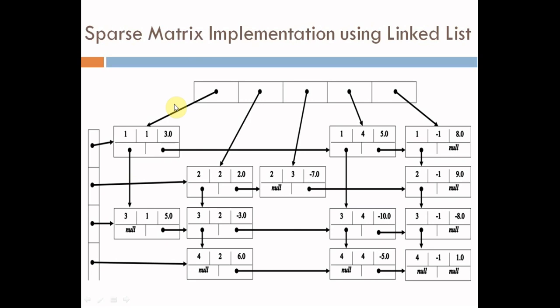For example, if a value is present at row 2 and column 2, it will be shown as follows — a value of 2.0 stored at row 2, column 2. All zero values will not be stored in the sparse matrix; it will only store non-zero values.